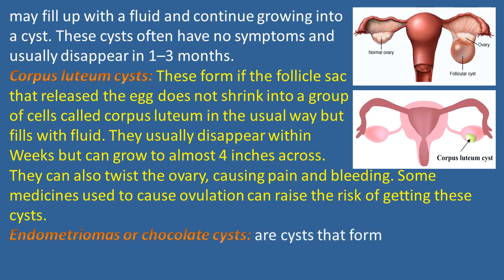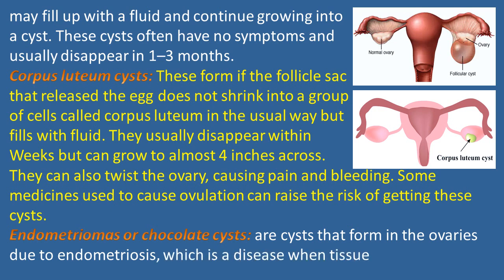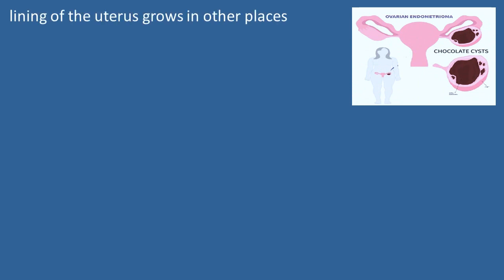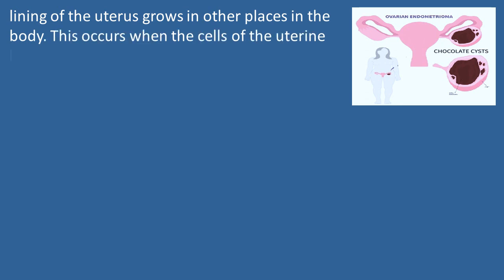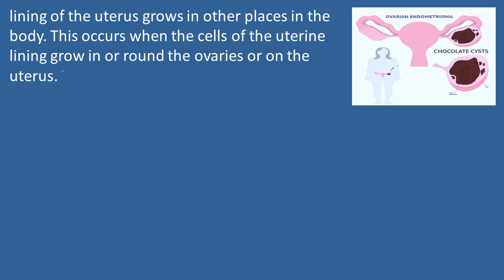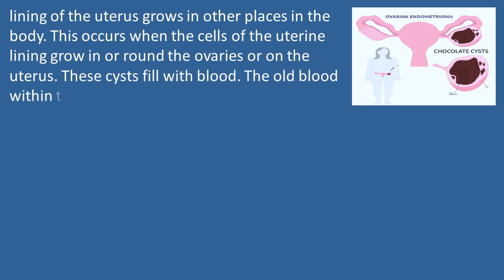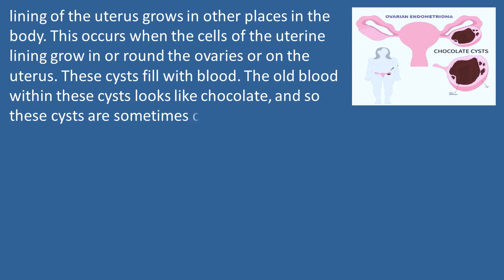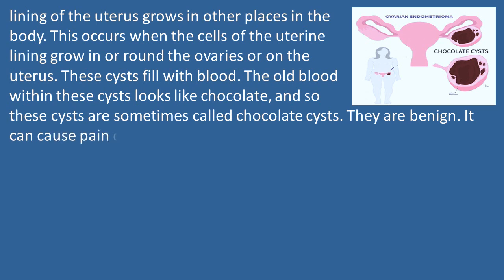Endometriomas, or chocolate cysts, are cysts that form in the ovaries due to endometriosis, a disease where tissue similar to the lining of the uterus grows in other places in the body. This occurs when cells of the uterine lining grow in or around the ovaries or on the uterus. These cysts fill with blood. The old blood within these cysts looks like chocolate, which is why they are sometimes called chocolate cysts. They are benign but can cause pain during menstruation and sex, as well as infertility.